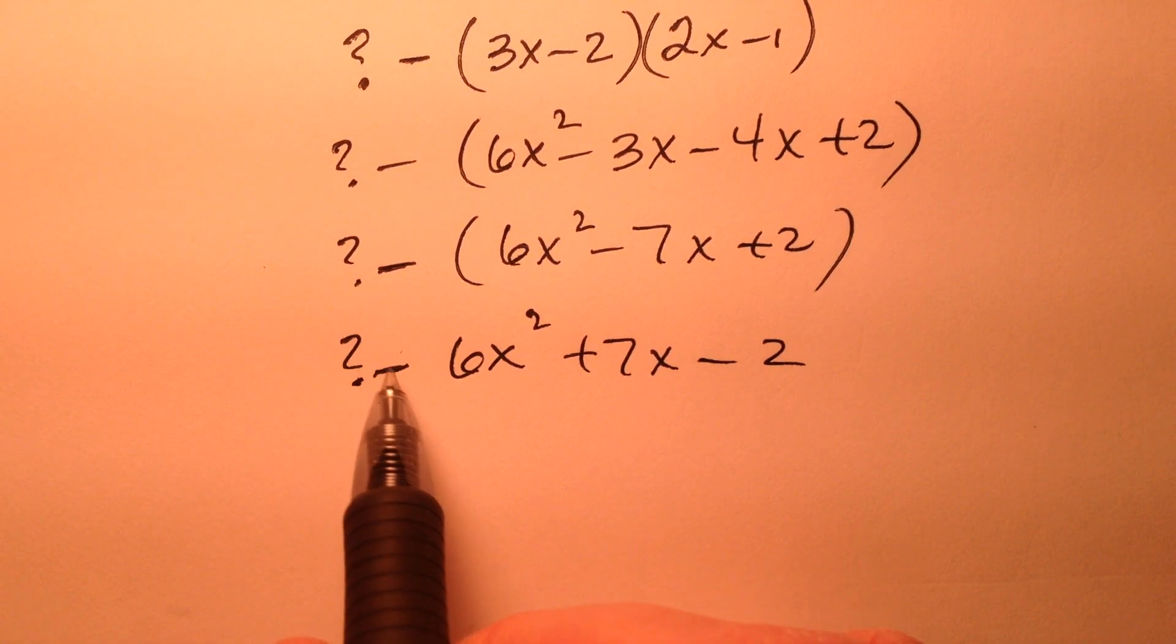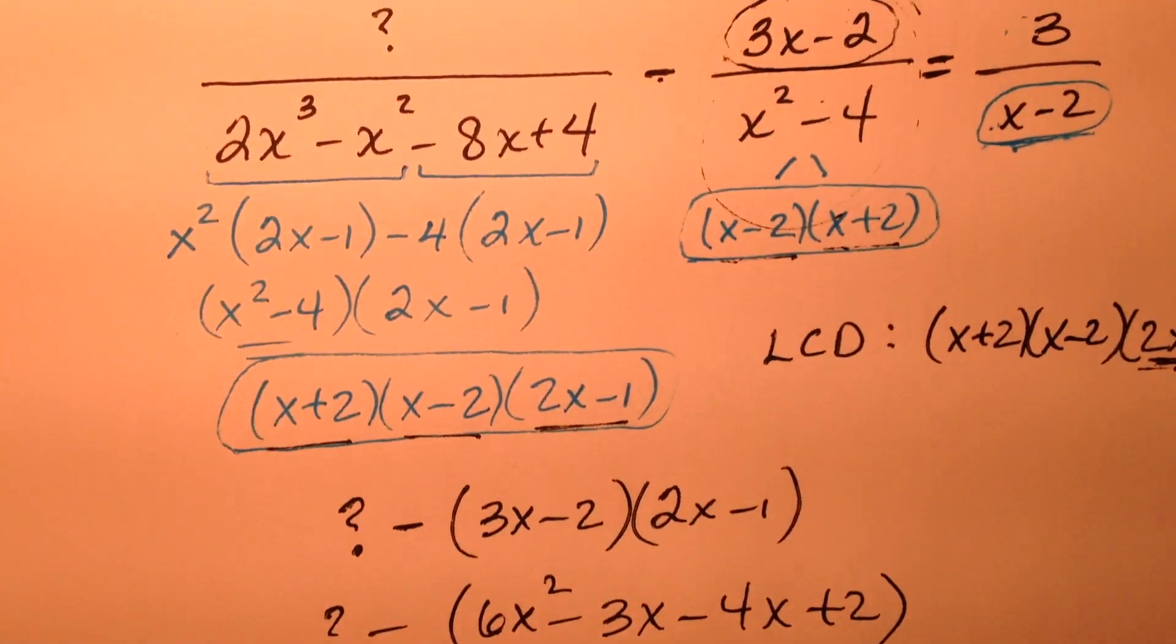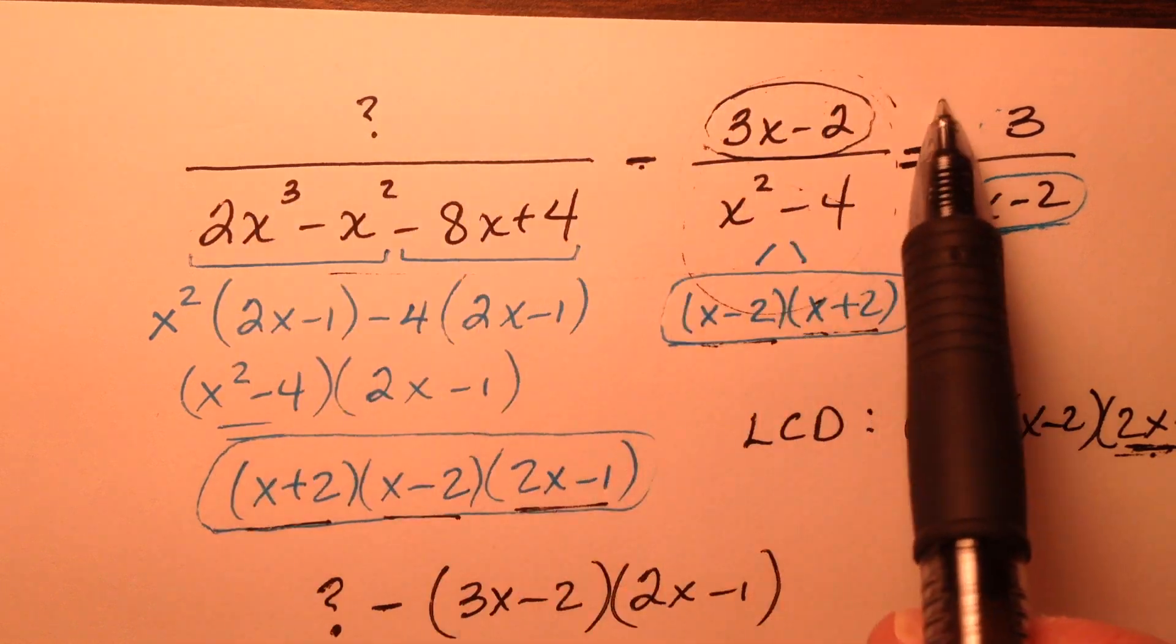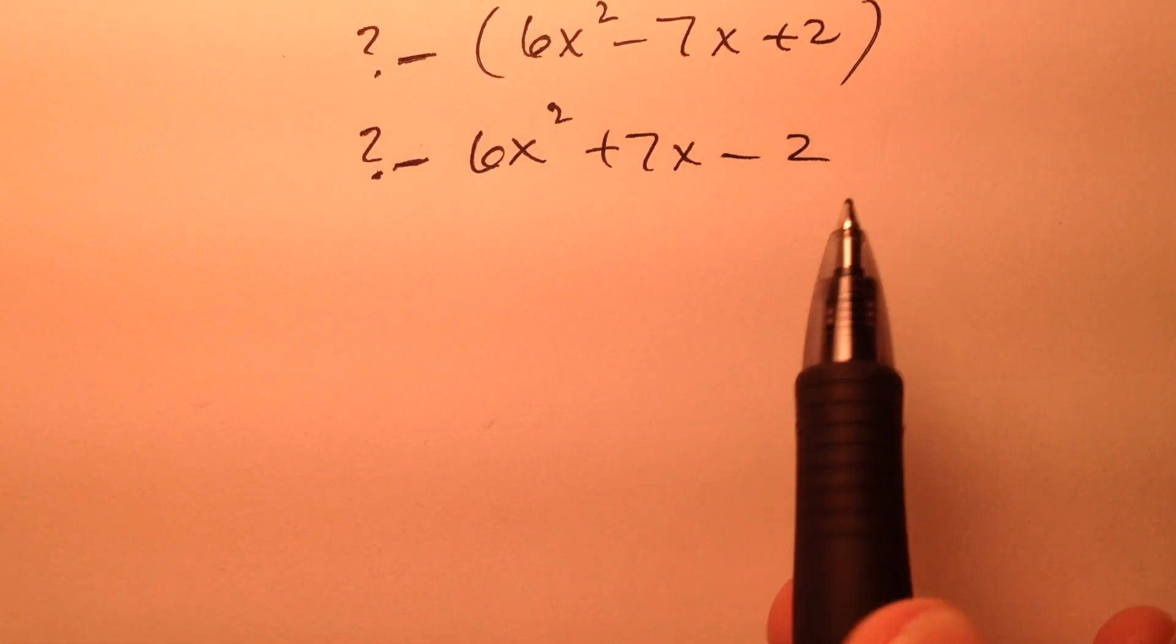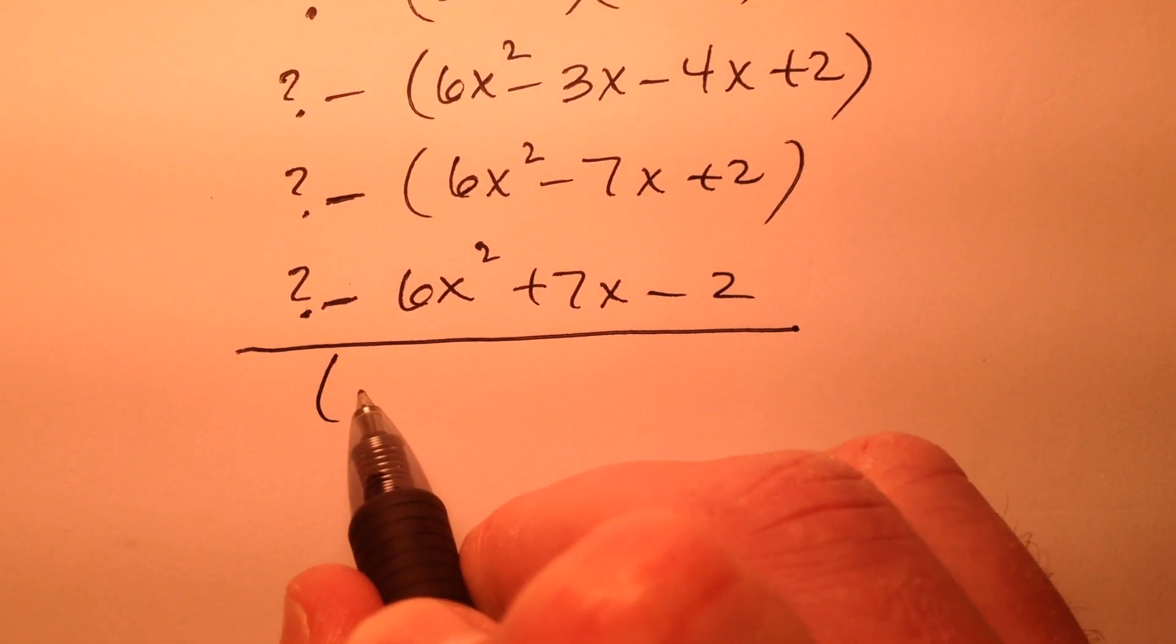So this is what the whole numerator turns out to be on the left side of this equation. So I've gotten common denominators, and this whole numerator is the question mark minus these terms.